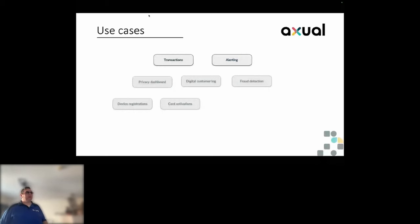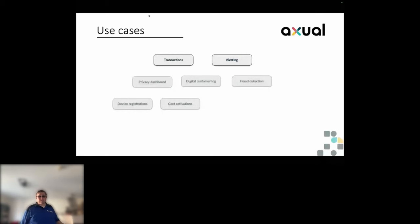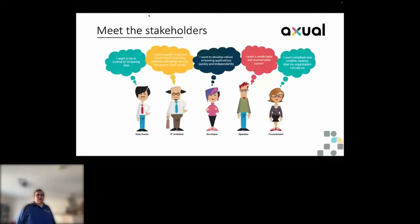When talking about an enterprise, we usually deal with several types of stakeholders: business stakeholders, data owners who want to be responsible and in control of certain data types, architects who want a stable and ready-to-go platform, developers who just want to develop, deploy, and run without being limited by processes or tools, operators who want predictability and maintainable systems, and procurement who want reliable vendors.